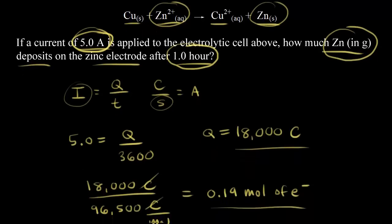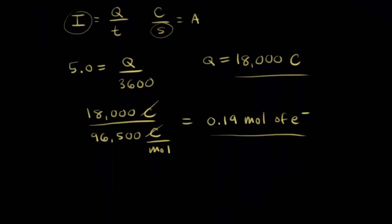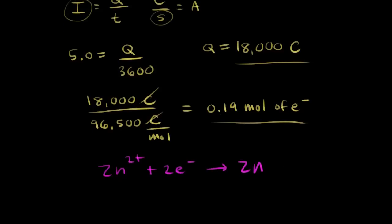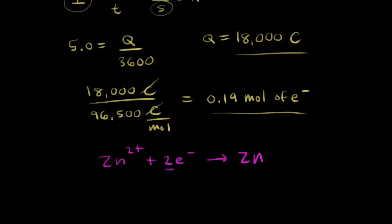Zinc two plus plus two electrons forms solid zinc. So let's write down our reduction half reaction. We know that zinc two plus ions are being reduced to form solid zinc. Let's think about those mole ratios. Two moles of electrons are needed to reduce one mole of zinc two plus ions to form one mole of solid zinc.